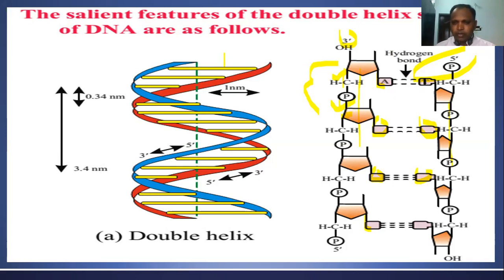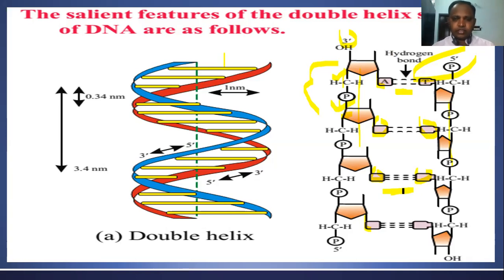The base pairing is through hydrogen bonding. Adenine and thymine have two hydrogen bonds, whereas guanine and cytosine have three hydrogen bonds. This is the double-stranded DNA structure, and the geometrical information about the DNA double helix has been provided.